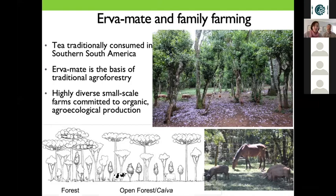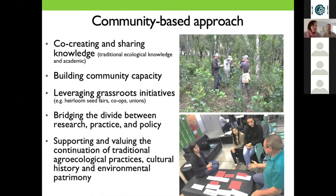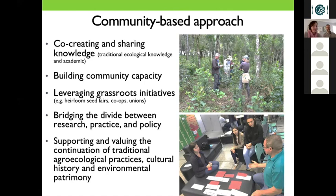What we're trying to do is work with these small-scale farmers to figure out ways to continue traditional systems and help them expand across the landscape, which will increase forest cover and improve landscape ecology. Our approach is very community-based, doing a range of practices and methods with our farmers and partners to co-create knowledge. We're incorporating traditional ecological knowledge with academic knowledge, mostly through oral history interviews — interviewing the farmers to understand how they perceive the forest, what traditional practices they've used in the past, and how they understand the importance of forest conservation. We're also trying to leverage grassroots initiatives like heirloom seeds that farmers have been collecting and trading for years, to support and continue valuing traditional agricultural practices rich in cultural and environmental history.